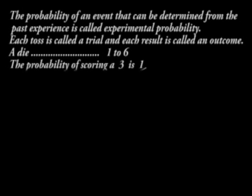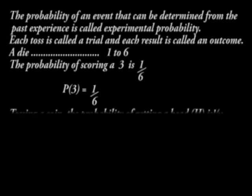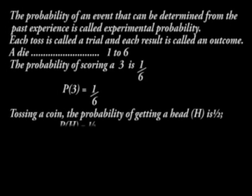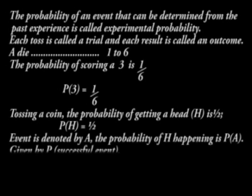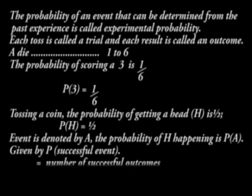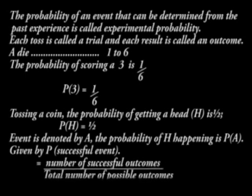A die is a small cube with faces bearing numbers 1 to 6. The probability of scoring a 3 is 1 over 6. We can write this as P(3) = 1/6. Similarly, in tossing a coin, the probability of getting a head H is a half, written as P(H) = 1/2. In general, if an event is denoted by A, the probability of it happening is P(A), given by the number of successful outcomes over the total number of possible outcomes.